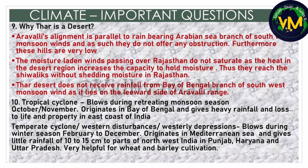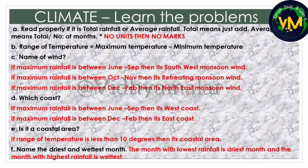Coming to the most important part - problems in the climate chapter. Often the question will ask for total rainfall or average rainfall. Read the question properly: if it is total rainfall, just add the rainfall column. If it is average rainfall, it is total divided by the number of months. For all these problems, remember no units means no marks - you will get zero even if your answer is correct. For rainfall, the unit should be in centimeters, and for temperature, the unit should be in degrees Celsius. Range of temperature is maximum temperature minus minimum temperature. To identify the name of the wind, look at the rainfall column: maximum rainfall between June to September means Southwest monsoon wind; October to November means retreating monsoon wind; December to February means Northeast monsoon wind.